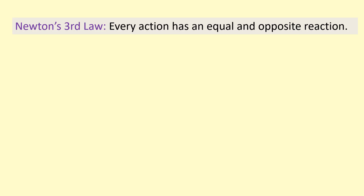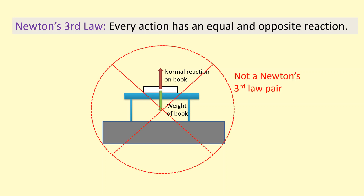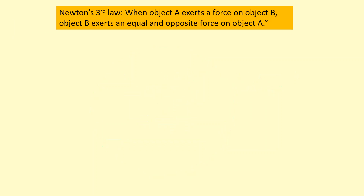Most people mistakenly give Newton's third law as 'every action has an equal and opposite reaction,' then incorrectly give a pair of forces on the same object as an example. This is not an example of a Newton's third law pair. If for every force on an object there was an equal and opposite force on it, then nothing would accelerate.